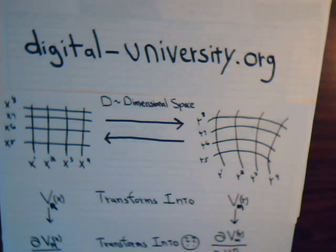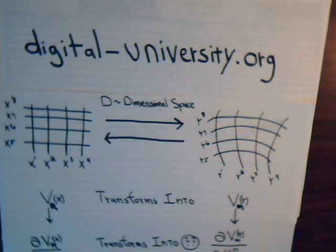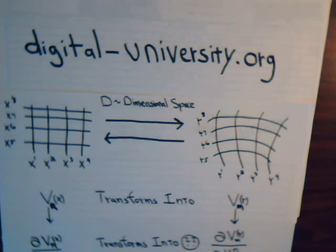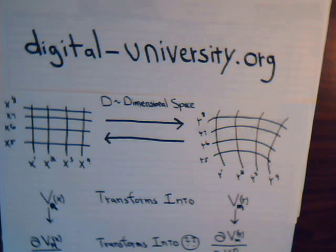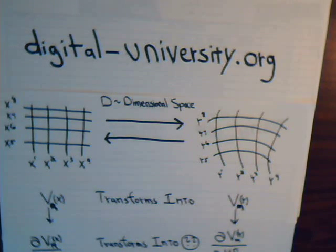This is video 23 in our series Topics in Tensor Analysis. In the last video, we had examined the derivatives of vectors or tensors and asked ourselves, do they transform like a tensor? And the answer was no. We demonstrated that starting with the Cartesian system and then working with the Curvilinear Coordinate System.